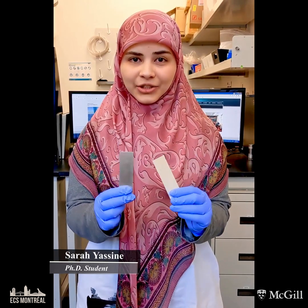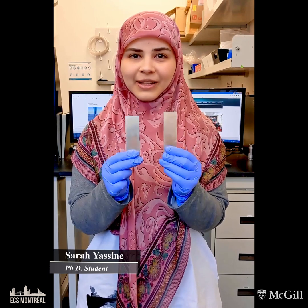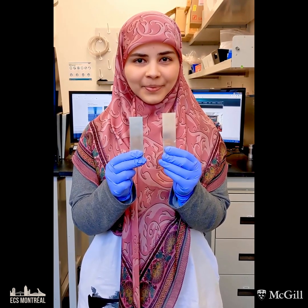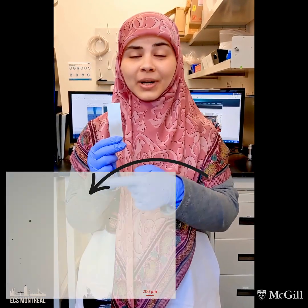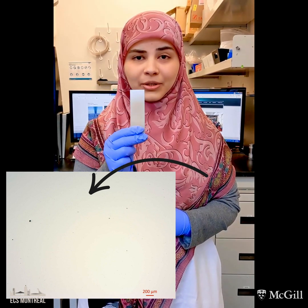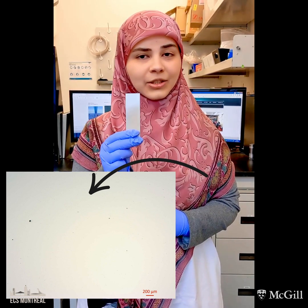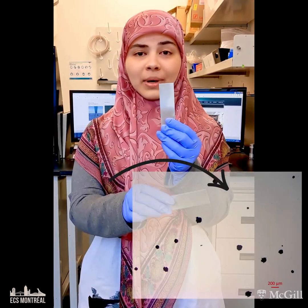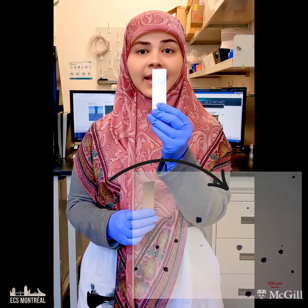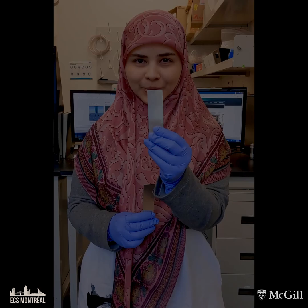Ever wondered if metal alloys appearing to be identical in shape are truly as such when evaluated at the micro scale? The image to my right is a closer look at how this metal would appear — a totally non-corroded sample — while the one to my left is the one corresponding to this alloy, a highly corroded one.